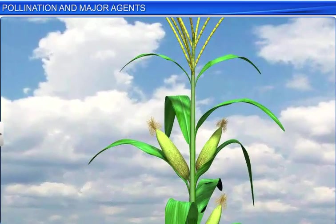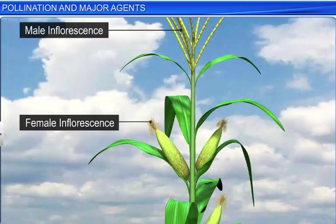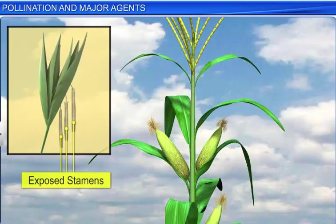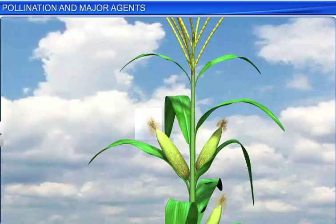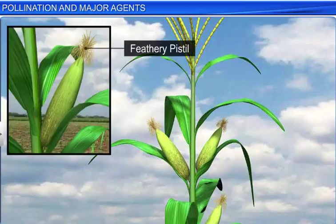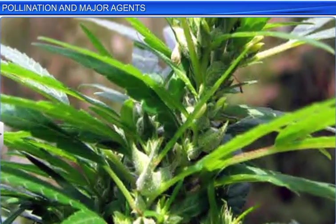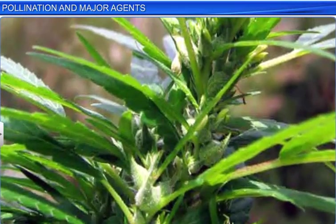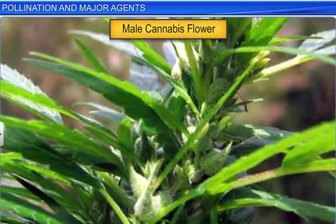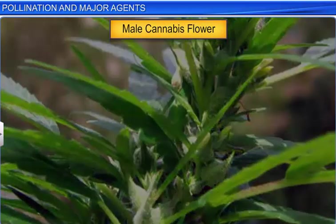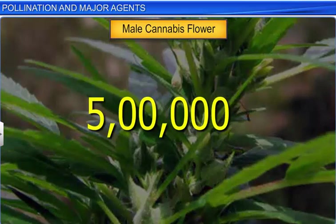These plants possess a compact inflorescence with well-exposed stamens that allow easy dispersal of pollen, and a large feathery pistil which makes it easy to trap pollen. The pollen, which is light and non-sticky, is produced in large quantities. A single flower of Cannabis, for instance, produces 5 lakh pollen grains to compensate the loss of pollen associated with wind pollination.